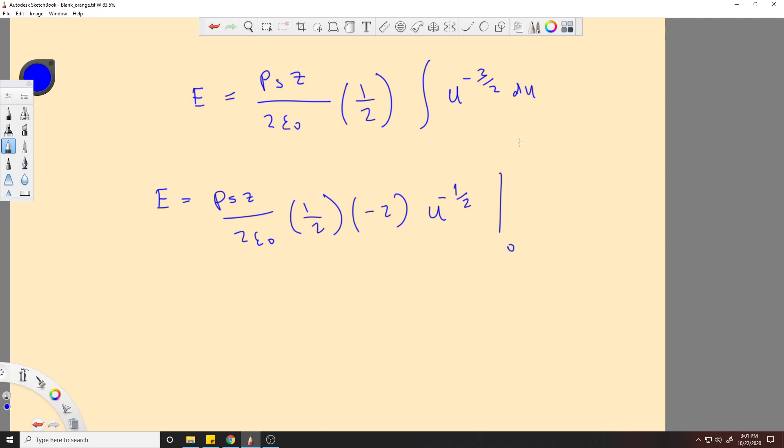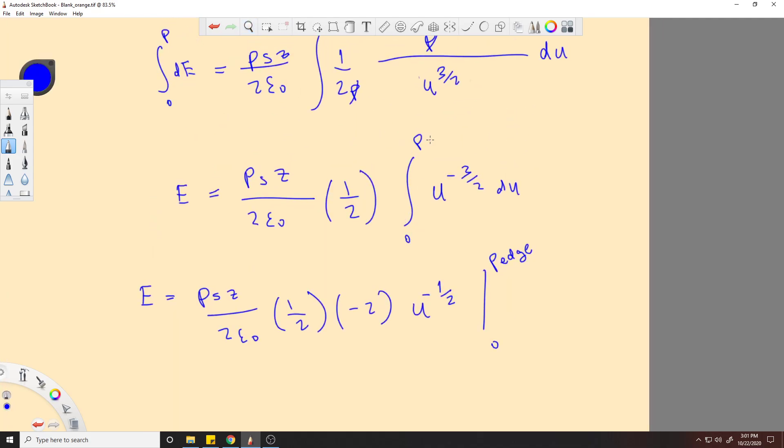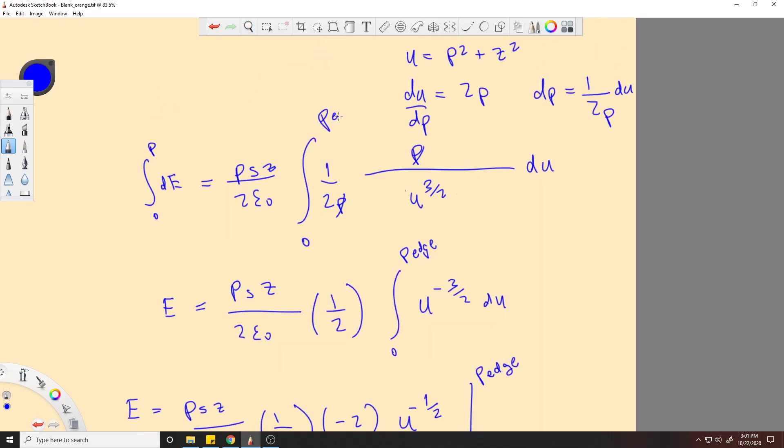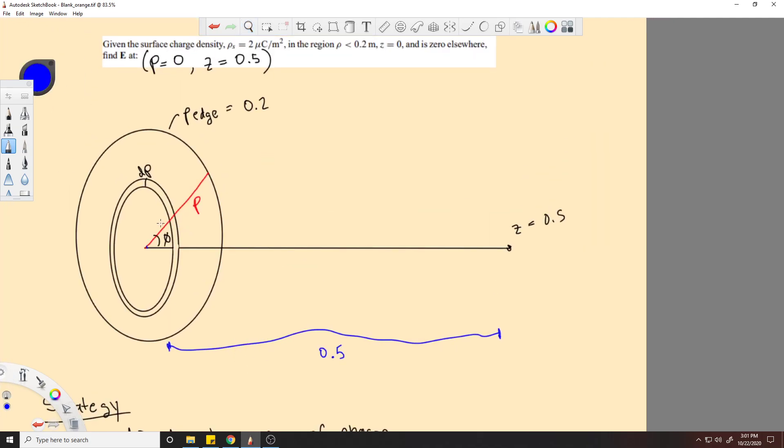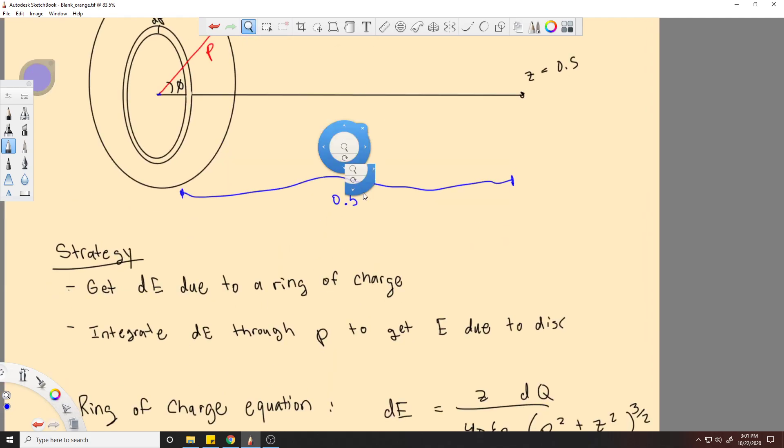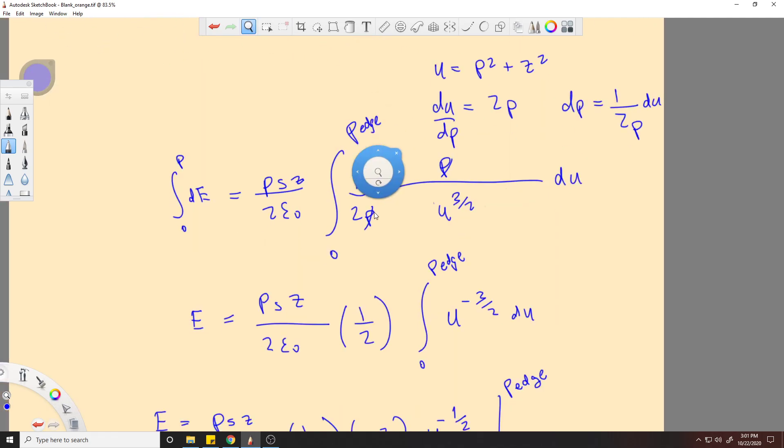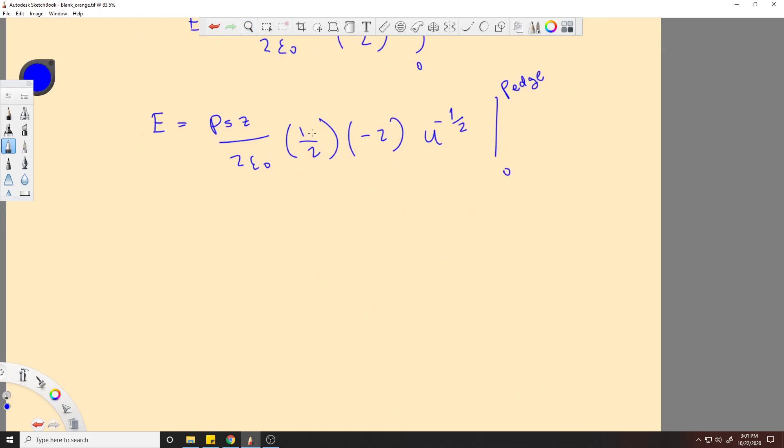And I should have said this in the beginning, but we're integrating from like 0 to the edge of the rho. I'll just call it rho edge. So we're integrating from here to here, so this is rho edge. It's 0.2. It's a constant number. But I like to leave it out, because then you have an equation left over that you can use for more than just this problem.